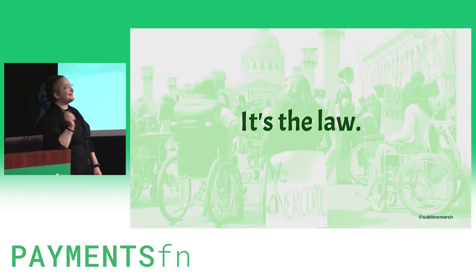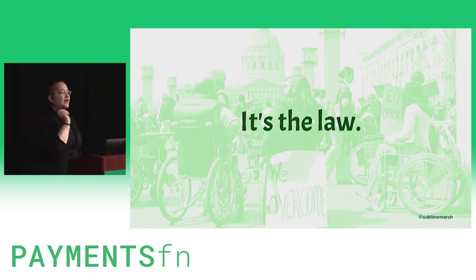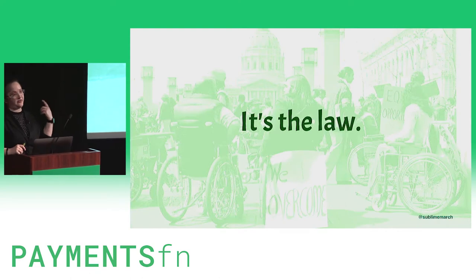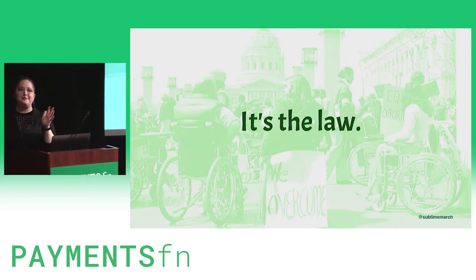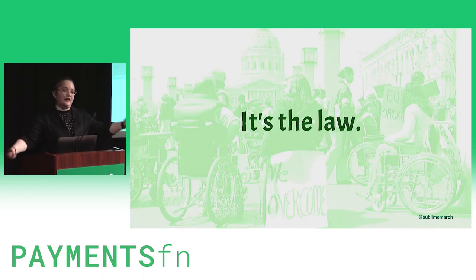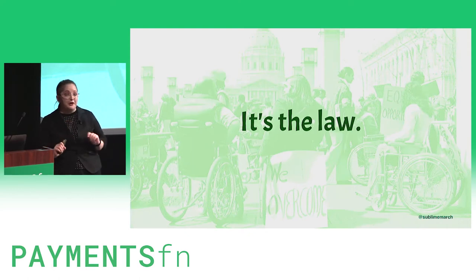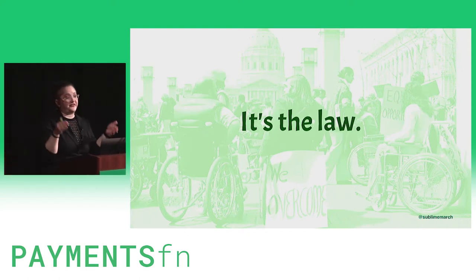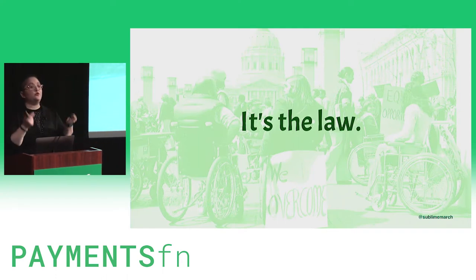Another good reason to build things accessibly is that it's the law. There are a lot of laws created in the United States and across the world as a result of the disability rights movement. In the U.S., we have the Rehabilitation Act passed in the '70s, which governs companies and the government that receive money from the government. You've also likely heard of the Americans with Disabilities Act, the ADA, passed in 1990, which generally governs accessible things within the public space. A lot of modern technology isn't explicitly included under that 1990 law, but cases in the last decade have made it very clear that we all have to worry about ADA compliance.